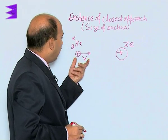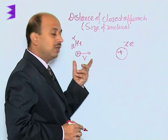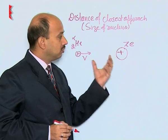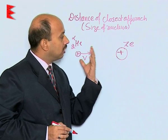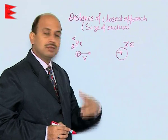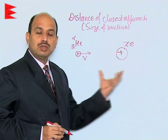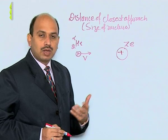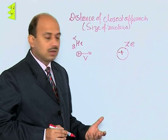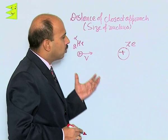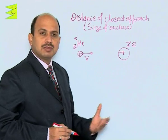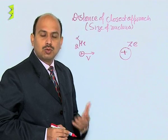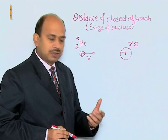Also, the alpha particle and the nucleus are both considered as point particles having no dimensions, and the collision between them is considered an elastic collision due to the Coulombic force of repulsion.